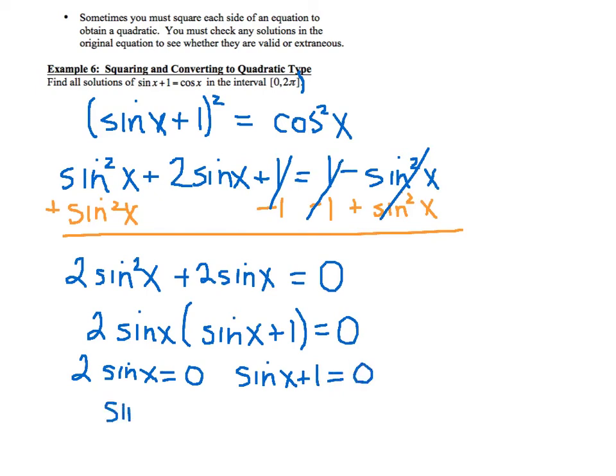So in this case, you get where sine of x equals 0, and in this case you're going to have where sine of x is equal to negative 1. So the nice thing is we only have 4 points on our calculator that has 1s and 0s, and that would be at 0, pi over 2, pi, and 3 pi over 2.